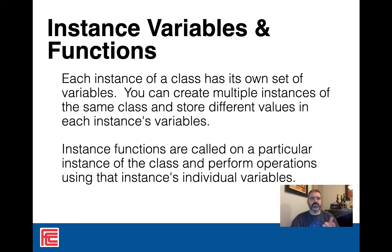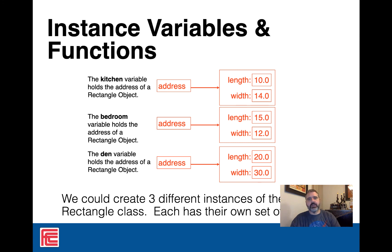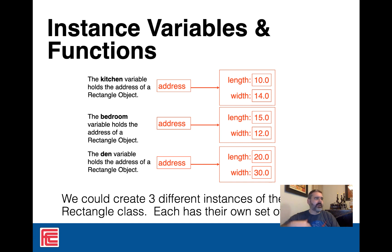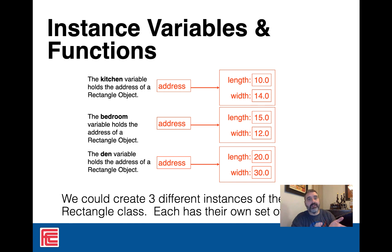Every single instance has its own set of variables. When you call a function on an instance, it's going to have access to those individual things. If I call area on a kitchen, I get 140 square feet. If I call area on the bedroom, I get whatever that is. If I do get length on den, it's going to be 20 — because every single object has a different set of values inside of it. That's the idea: if I want Buster Posey's batting average, I say 'buster_posey.getBattingAverage()' and get his batting average, not anybody else's.